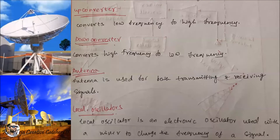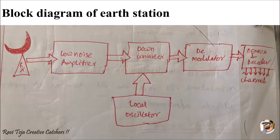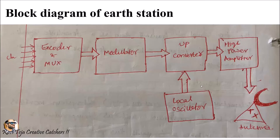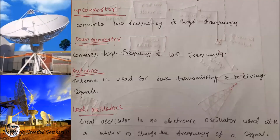The up converter converts low frequency into high frequency, and the down converter converts high frequency into low frequency. An antenna is mainly used for transmission and receiving of signals. The local oscillator, fixed in both the transmission and reception units, is an electronic oscillator — also called a mixer. Its main purpose is to be used with a mixer to change the frequency of a signal whenever there is a need for a frequency change, generating the required frequencies.